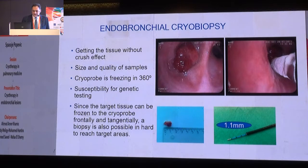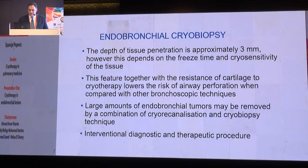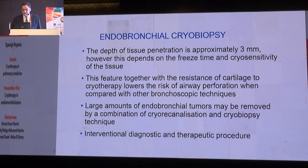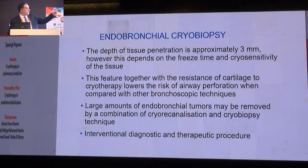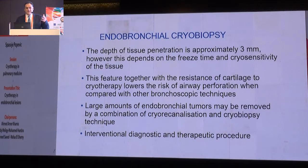The tissue is susceptible for genetic testing, and since the target tissue can be frozen to the cryoprobe both directly and tangentially, you don't need to maneuver too much to get a proper biopsy as you do with forceps. Biopsy is also possible in hard-to-reach target areas. The depth of tissue penetration is around three millimeters, depending on freeze time and cryosensitivity of the tissue. Together with the resistance of cartilage to cryotherapy, this lowers the risk of perforation compared to other bronchoscopic techniques. Large amounts of endobronchial tumor can also be removed.